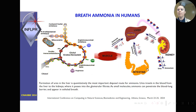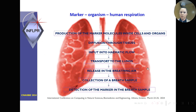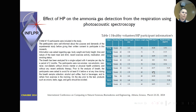Ammonia is a byproduct of the degradation of proteins in the stomach, and as a small molecule it can penetrate the blood-lung barrier and appear very easily in human respiration. The steps of the marker from production to detection are: first, production of the marker inside cells and organs; then diffusion through tissues and input into hematic flow; transport to the lungs; releasing into breathing air; collection of a breath sample; and finally detection of the marker in the breath sample — in our case with this technique.